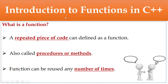So what is a function? A function is a repeated piece of code. So if you have a repeated piece of code in your program, you can define it as a function. It is also called as procedures or methods. In C++, this object-oriented programming language, it is called as methods. In C, it is called as procedures. Functions can be reused any number of times.